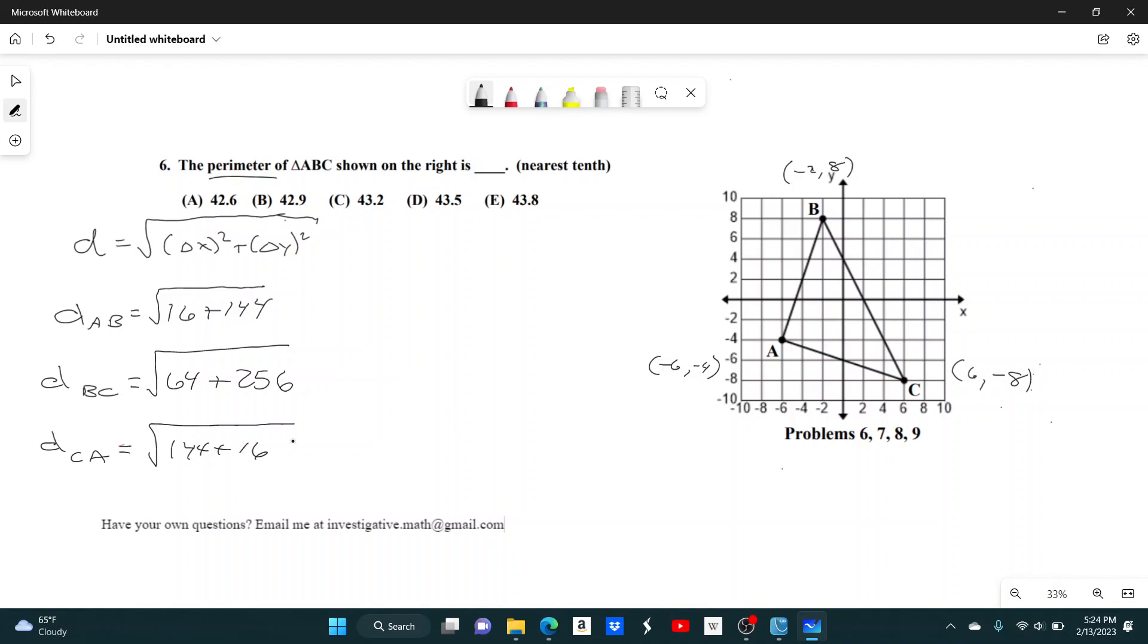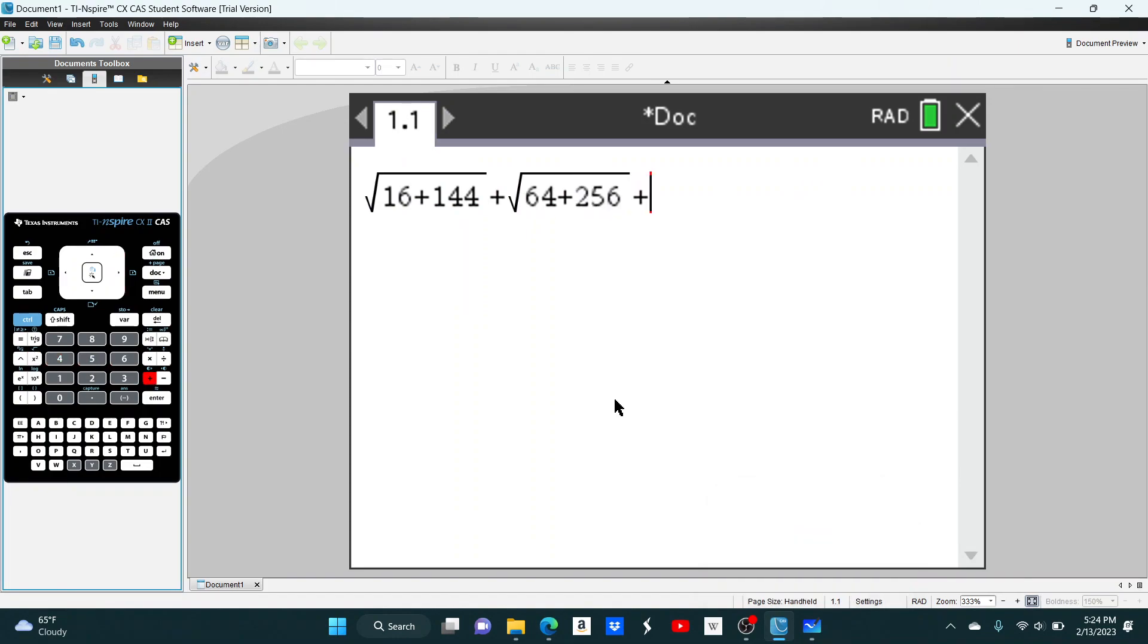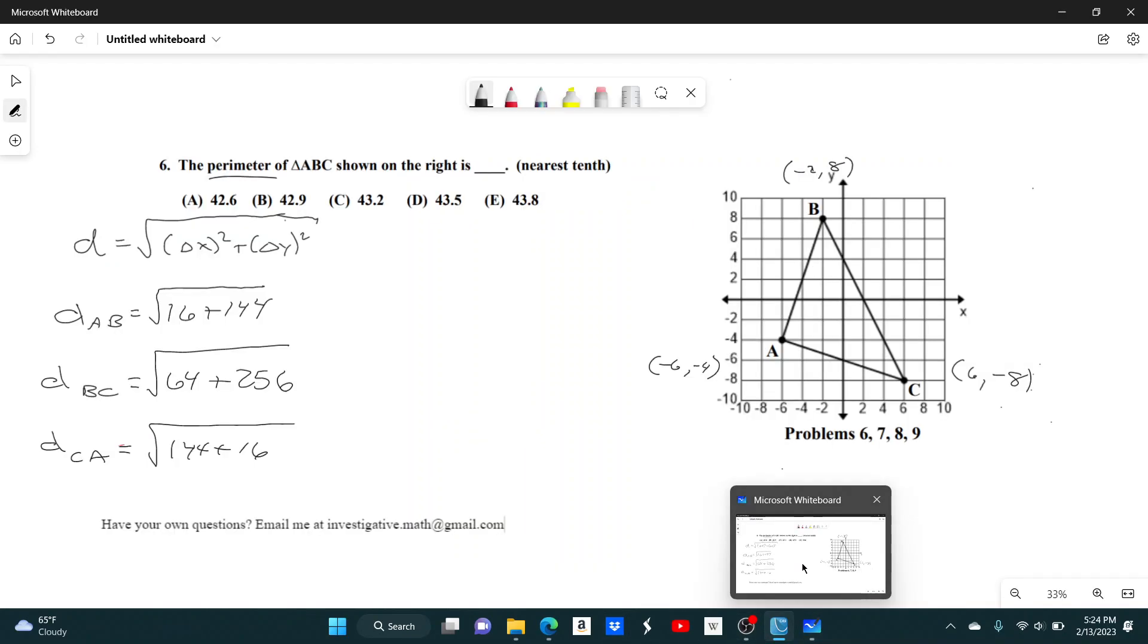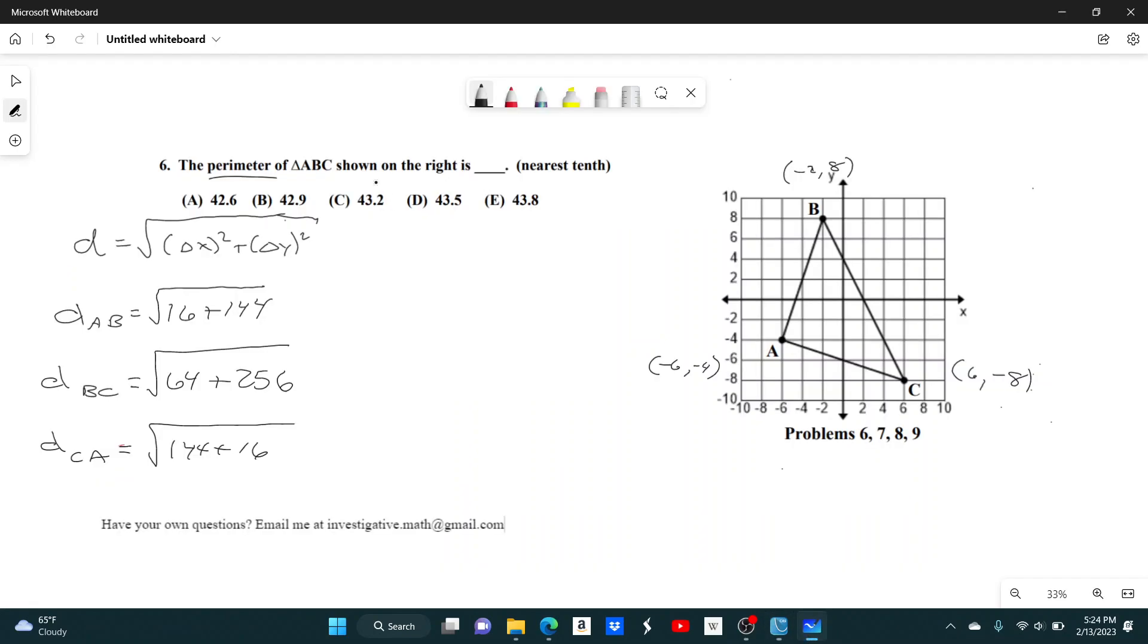I'm just going to type all this into the calculator. Our first one is the square root of 16 plus 144 plus the square root of 64 plus 256 plus the square root of 144 plus 16. And altogether, that gives us 43.2 rounded to the nearest tenth. So it's answer choice C.